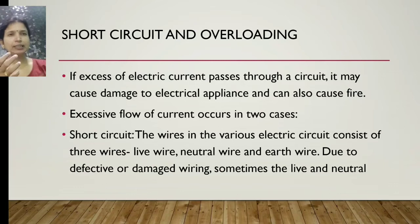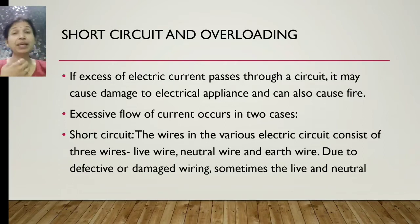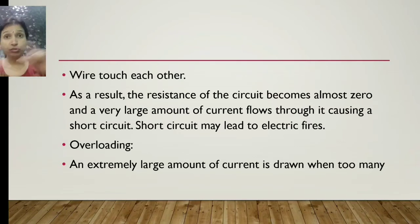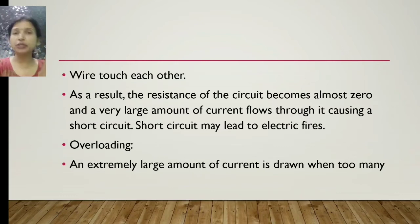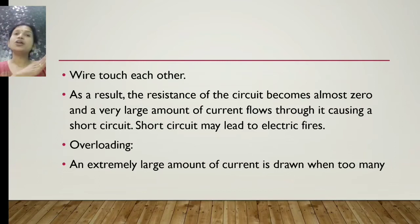The wires in an electric circuit consist of three types: the live wire, the neutral wire, and the earth wire. Due to defective or damaged wiring, sometimes the live and neutral wires get connected to each other. When they touch, there is almost zero resistance, and the electric current flowing through these wires becomes extremely high, which causes electrical fire — this leads to a short circuit.